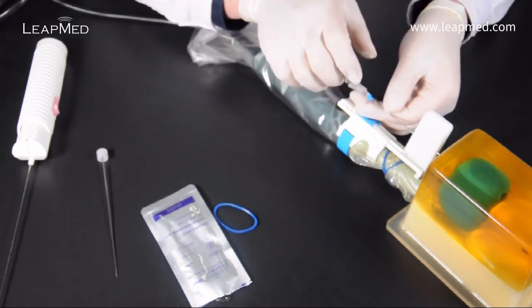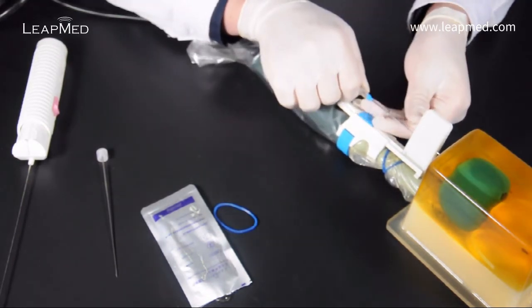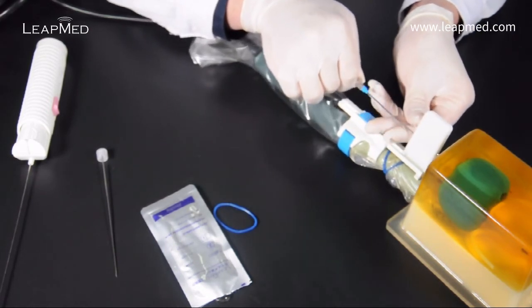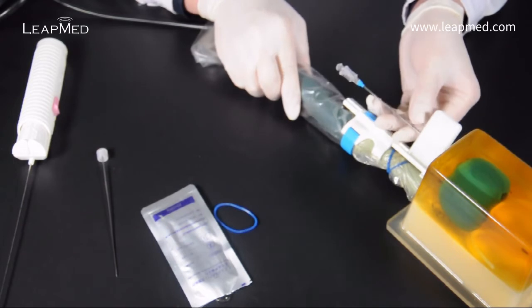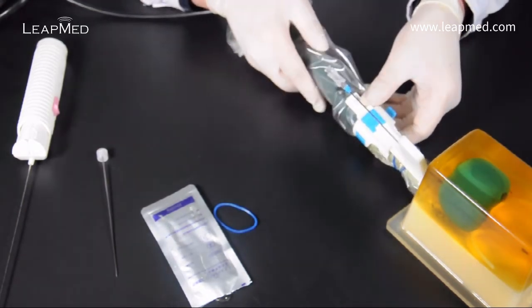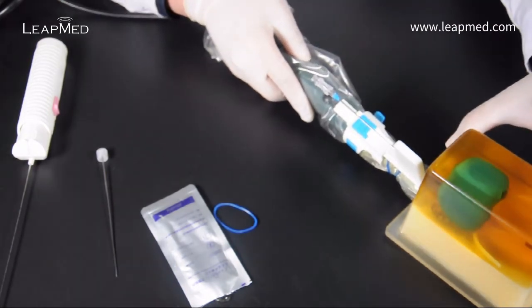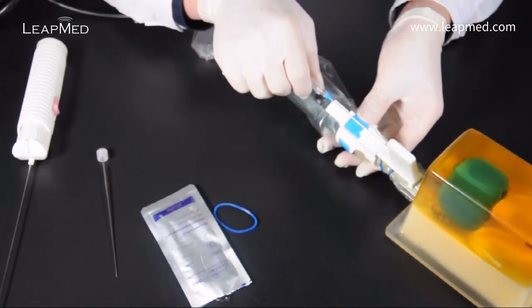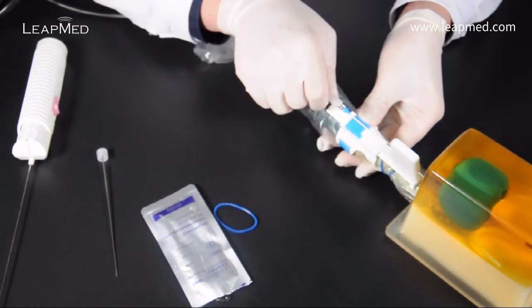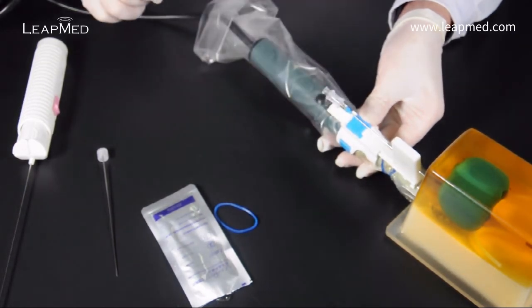During transperineal prostate biopsy it is not uncommon to take several biopsies from the same puncture hole. You can rotate the probe to choose another needle path for the introducer. You can use the biopsy needle to continue and take another 5 or 6 biopsies from here.